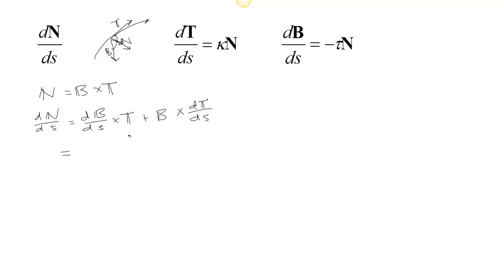We actually know these pieces. dB/ds is minus tau, the torsion, times N, and then we have N cross T. And dT/ds equals kappa, the curvature, times the unit normal. So we get minus tau times the cross product of N and T.